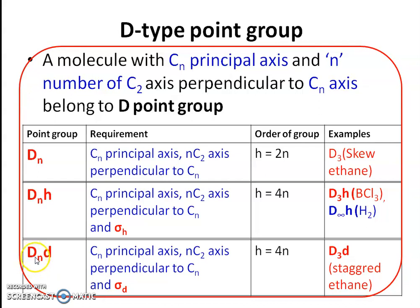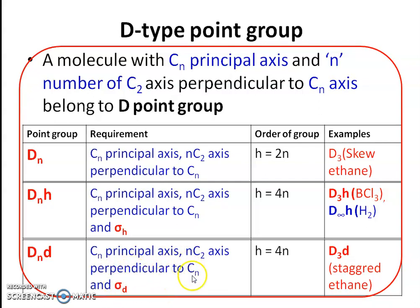The third subtype is the DnD point group. In DnD there is a Cn principal axis and n number of C2 secondary axes perpendicular to Cn, and additionally there is a dihedral plane, sigma D. The molecule may also contain sigma V, a center of inversion, or improper rotational axes, but the primary requirement is the Cn principal axis, n C2 axes perpendicular to Cn, and a dihedral plane.